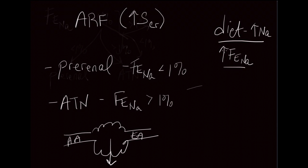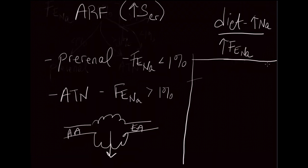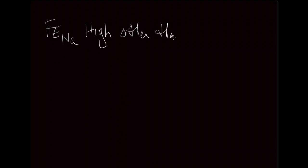And the way we do that is the following. The way we determine if someone has a high fractional excretion of sodium other than ATN would be to look at the urine output. And that's actually one of the best measures.